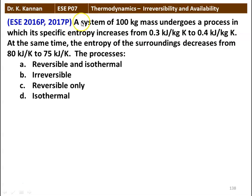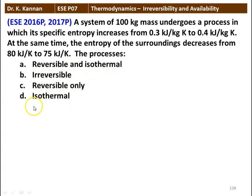Next question: a system of 100 kilogram mass undergoes a process in which its specific entropy increases from 0.3 kilojoules per kilogram Kelvin to 0.4 kilojoules per kilogram Kelvin. At the same time, the entropy of the surrounding decreases from 80 kilojoules per Kelvin to 75 kilojoules per Kelvin. The options are: reversible and isothermal, irreversible, reversible only, and isothermal. The answer is the process is irreversible.